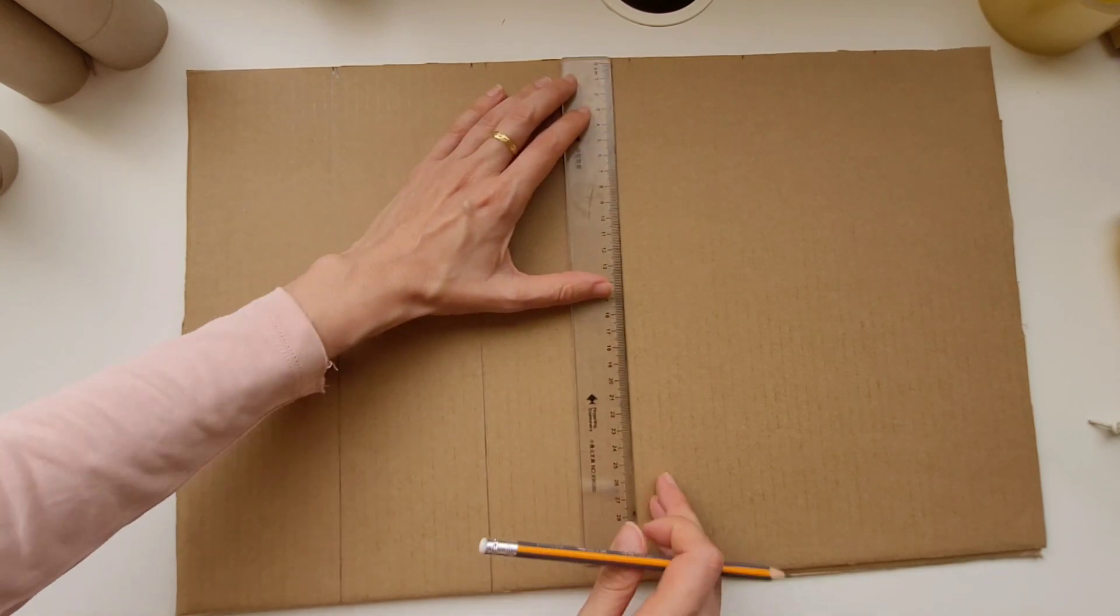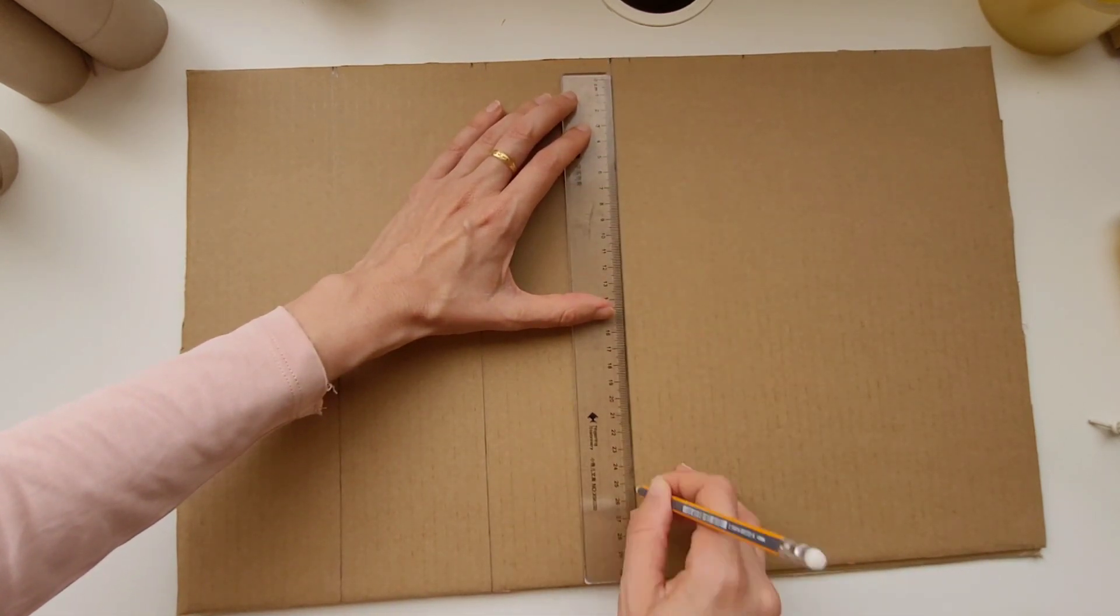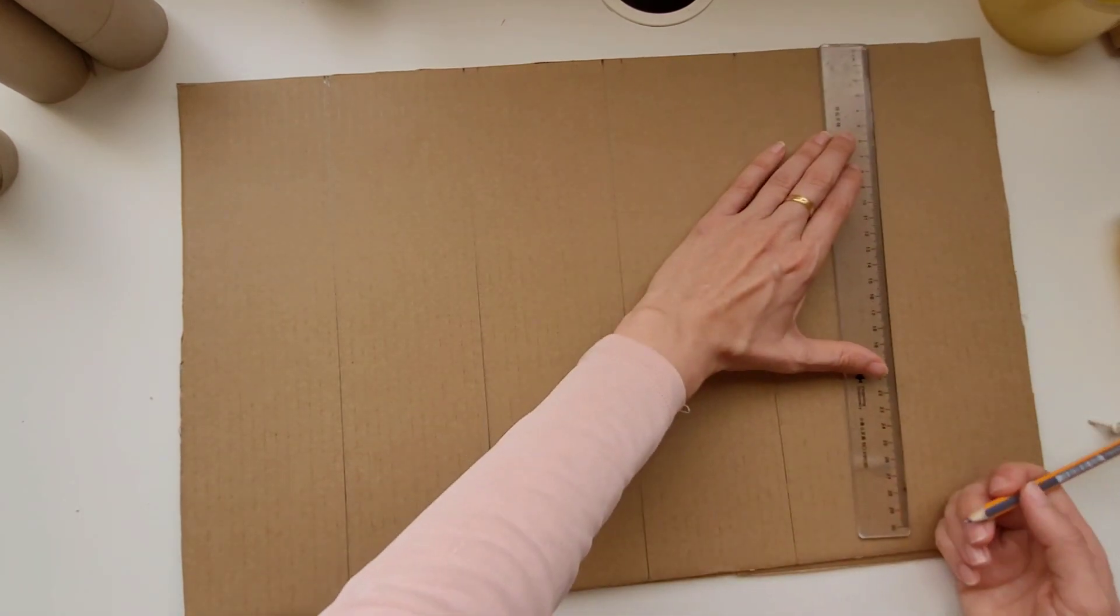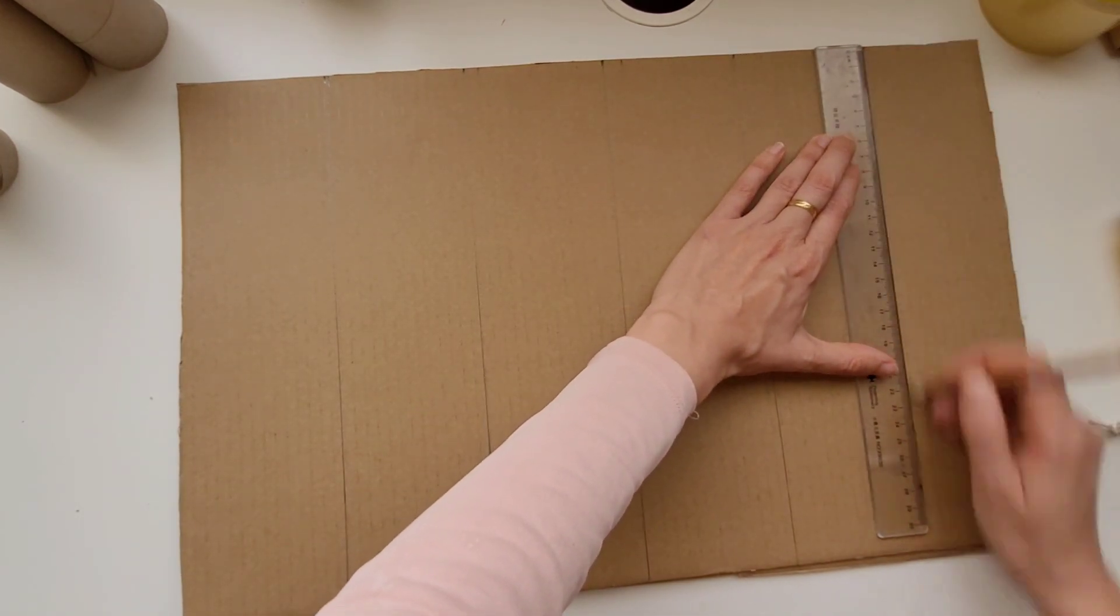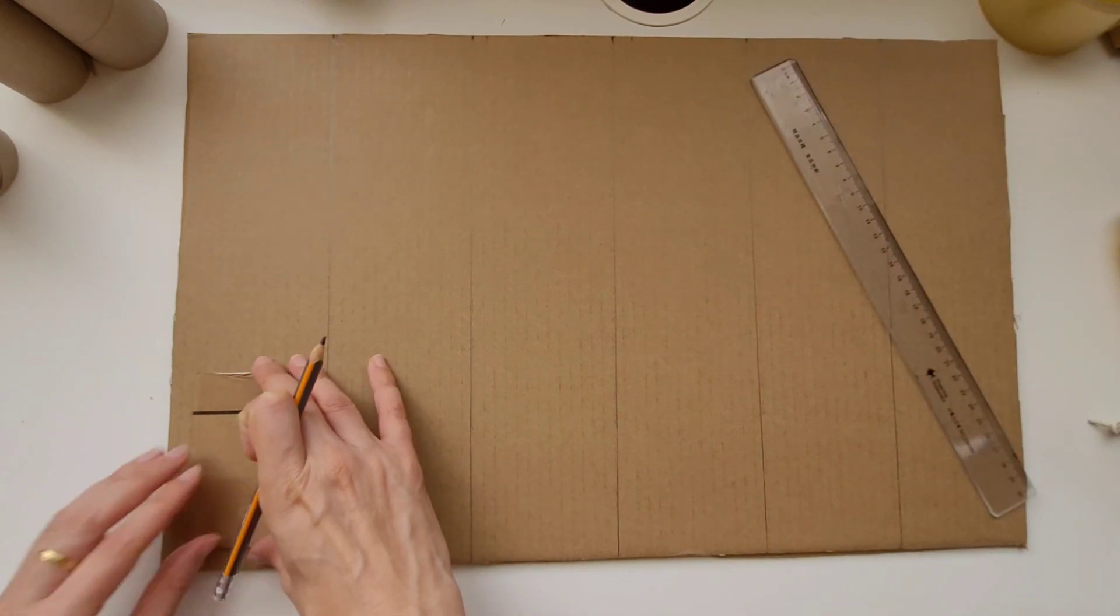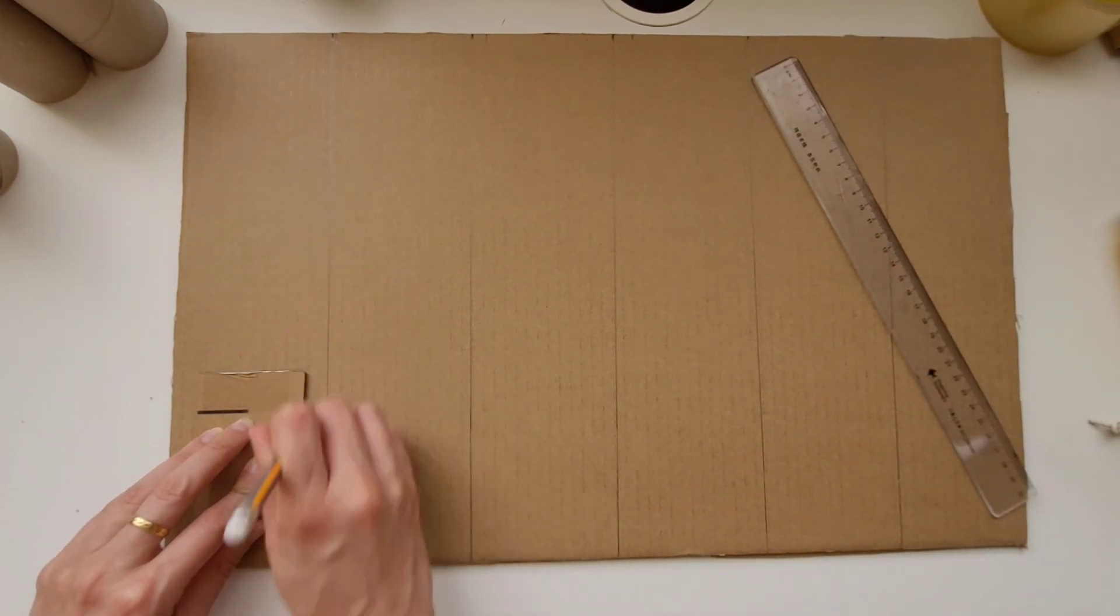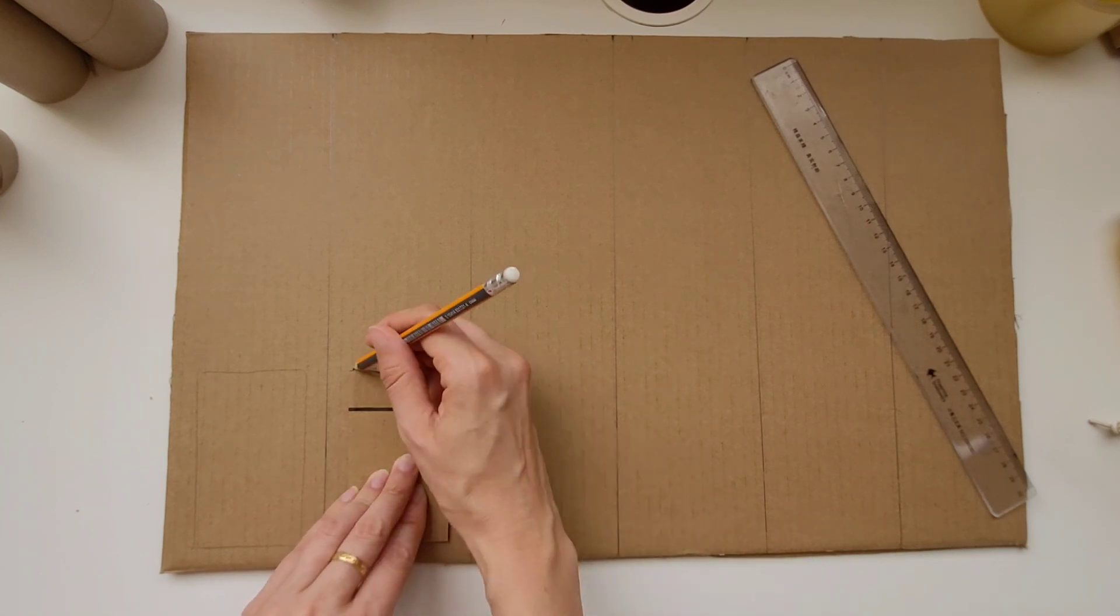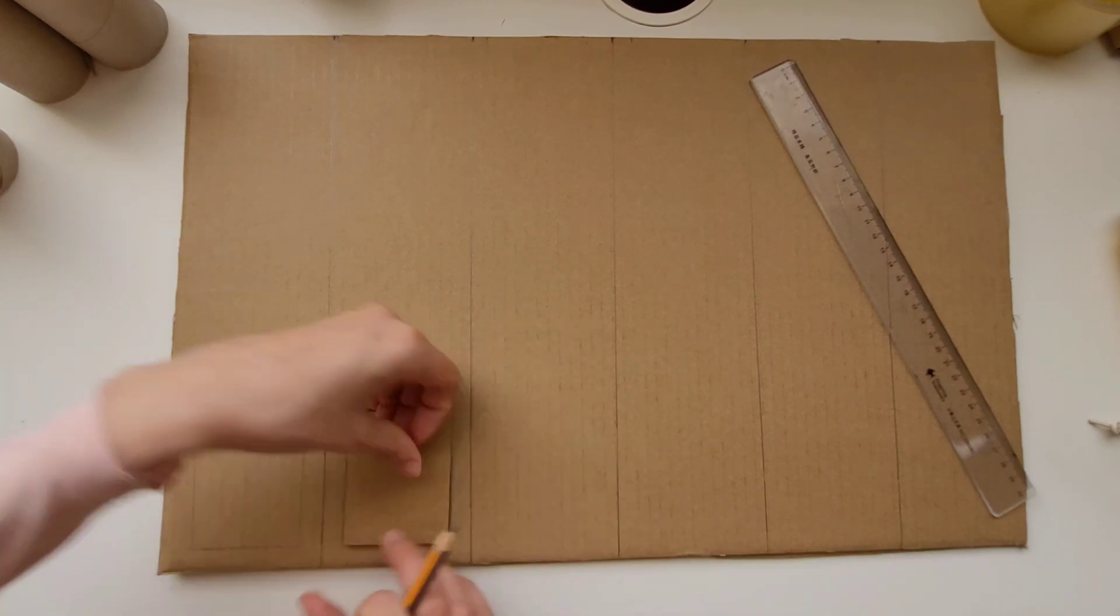I'm measuring out six here because my cardboard isn't very long, but if you have a long piece of cardboard, you can do all the way up to ten. After you measure out six long strips, you can measure out a rectangle at the bottom of each strip. After you're done measuring out all your rectangles, we can move on to the next step.